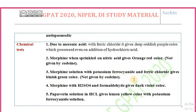The next test: morphine solution with potassium ferrocyanide and ferric chloride gives a bluish-green color, and this test is also not given by codeine. The next test: morphine with sulfuric acid and formaldehyde gives a dark violet color.